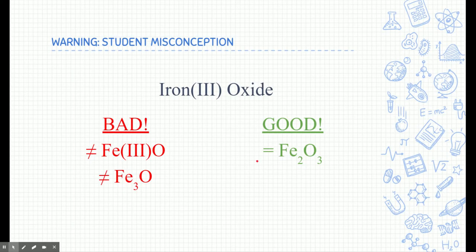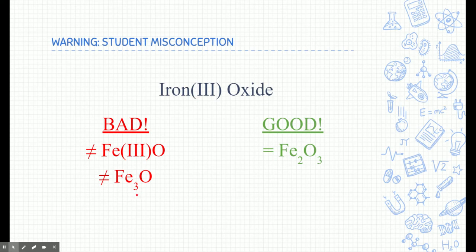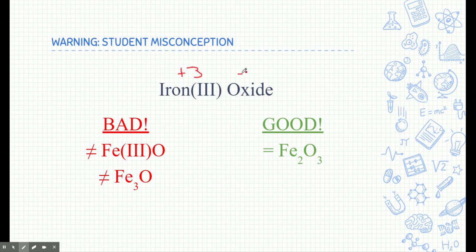Here's an important warning about common misconceptions. Never include Roman numerals in a chemical formula or equation — Roman numerals only belong in the compound name. Also, the Roman numeral does not represent the quantity of that element in the compound. For example, iron(III) oxide means the charge of iron is plus three, not that there are three irons. Use the zero-charge rule to determine the number of each element.